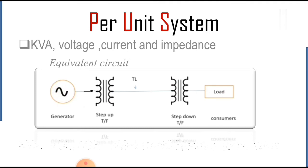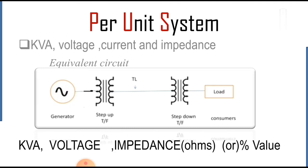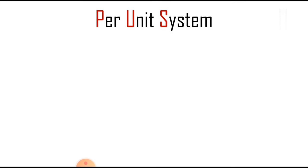Its impedance in ohms or in percentage value refers to its rated kVA and rated voltage. These direct calculations are very complex and in fact impossible due to the very large network of power systems.